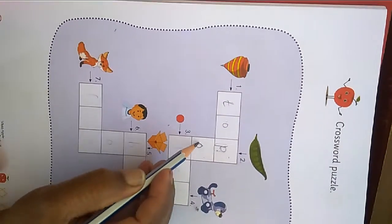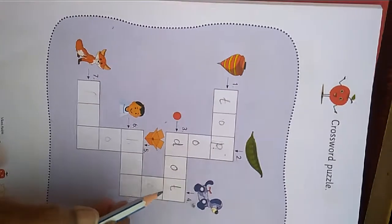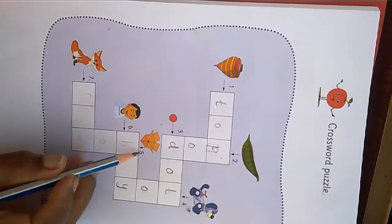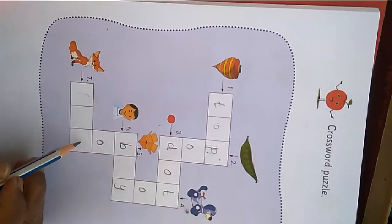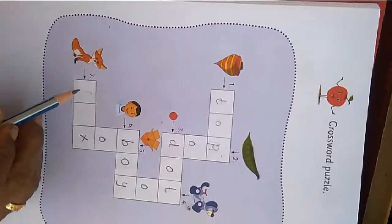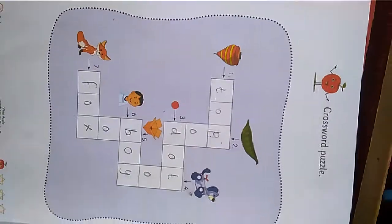P O D pod. D O T dot. Four number me T O Y toy. Five number me B O X box. Six number me B O Y boy. Seven number me F O X box.